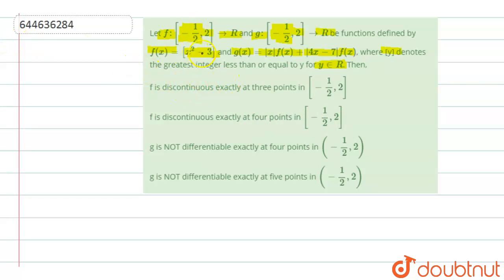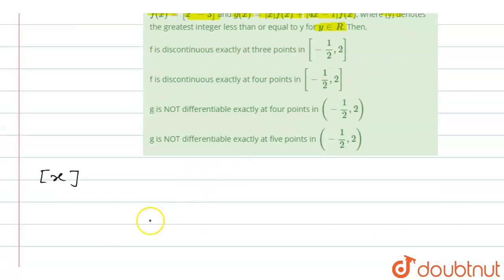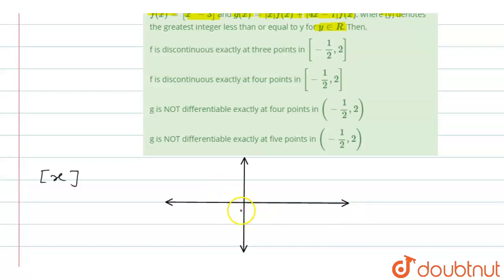First, let's find continuity or discontinuity for f(x). Since f involves the greatest integer function, recall that the greatest integer function ⌊x⌋ is discontinuous at all integer values. Looking at its graph: between 0 to 1, when x = 0 the value is 0, and for x just less than 1 the value is still 0.